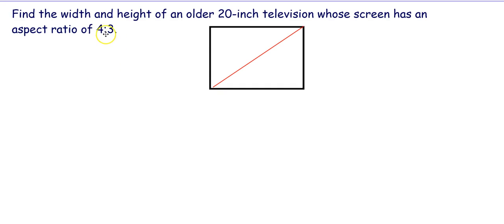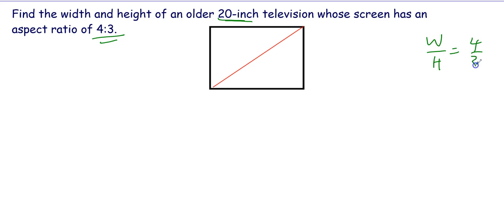In this video we are going to find the width and height of an older 20-inch television whose screen has an aspect ratio of 4 to 3. The size of the TV is 20 inches and its aspect ratio is 4 to 3, that is W over H is equal to 4 over 3. The diagonal length is equal to 20 inches, and we do not know the width or the height.